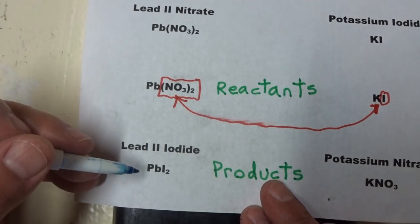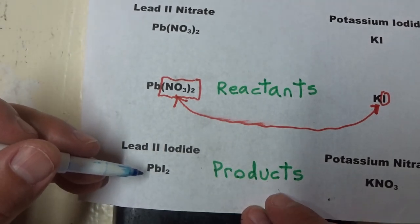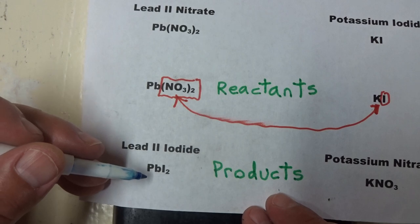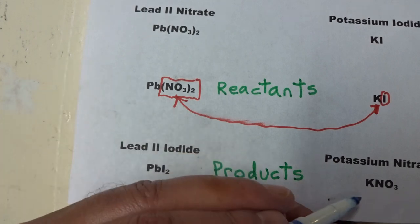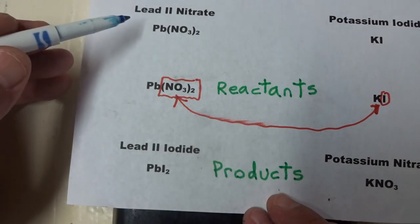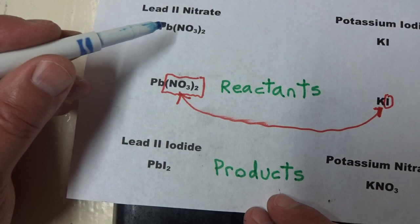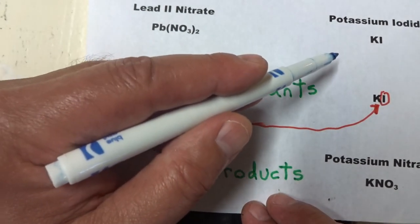So we have two new molecules that have reacted together and formed two products. Those two products are lead iodide and potassium nitrate from the reactants lead nitrate and potassium iodide.